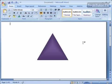I have a triangle here in my Microsoft Word 2007 document, and I'd like to rotate this triangle. This method works for any sort of object, any shape, any picture that you have in your Word document.